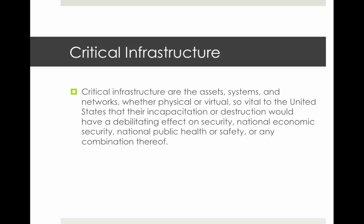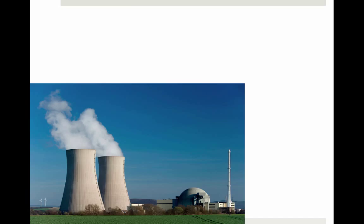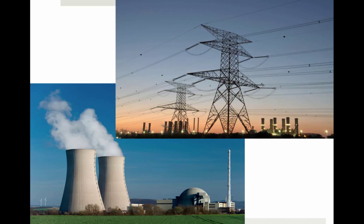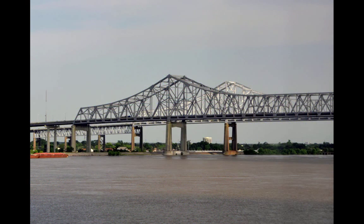FEMA provides this definition relating to critical infrastructure: critical infrastructure are the assets, systems, and networks — whether physical or virtual — so vital to the United States that their incapacitation or destruction would have a debilitating effect on security, national economic security, national public health or safety, or any combination thereof. That definition points to the assets and systems that contribute to our physical security, economic well-being, public health, and so on.